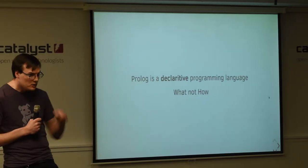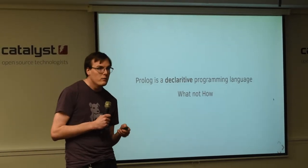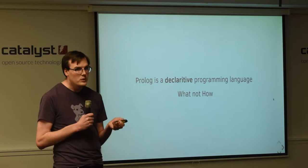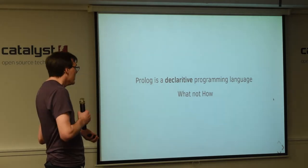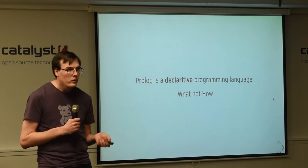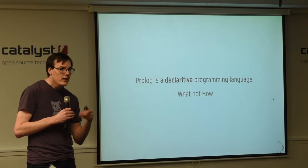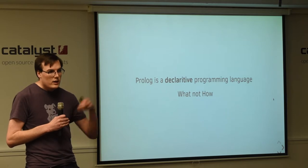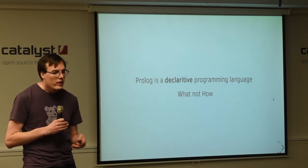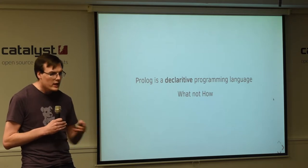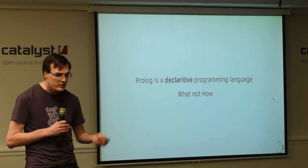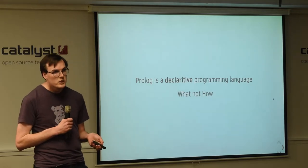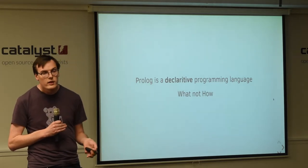Prolog is a declarative programming language, which if you are a programmer by profession, you may have come across this term before. But for those who haven't, declarative means that we tell the language what we want to do, what we want to achieve, and we allow the computer or the language, the compiler to actually define how it's done.